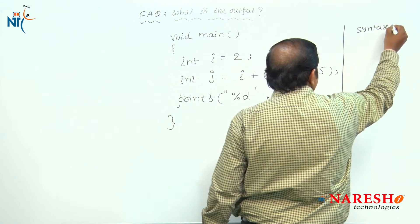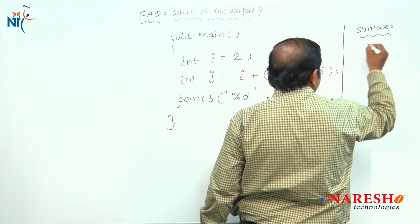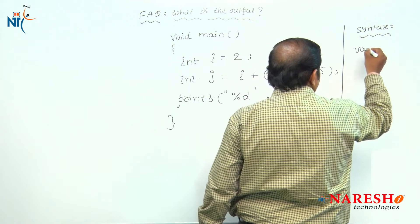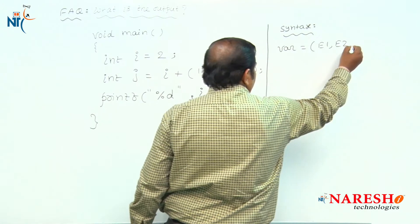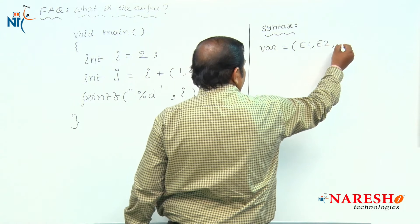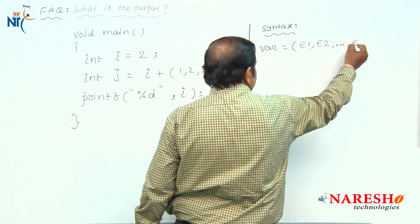This is the syntax to use comma operator: variable = expression1, expression2, and so on, expressionN.